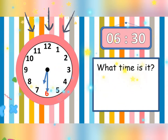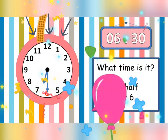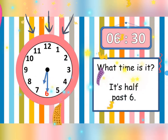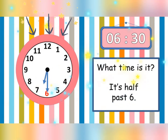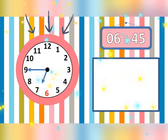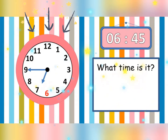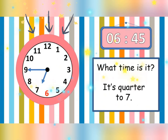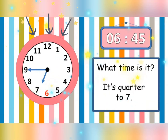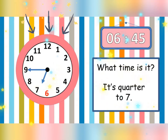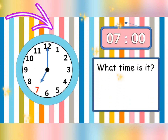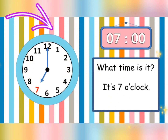What time is it? It is half past 6. What time is it? It is quarter to 7. What time is it? It is 7 o'clock.